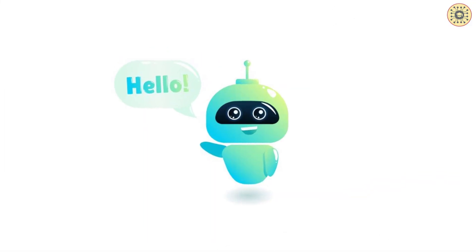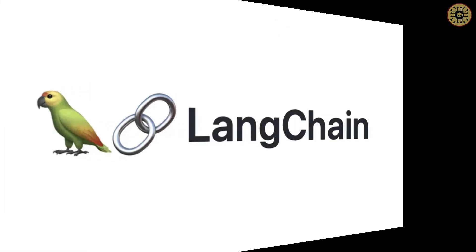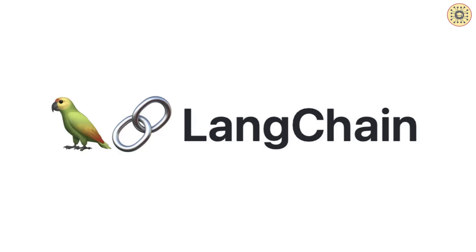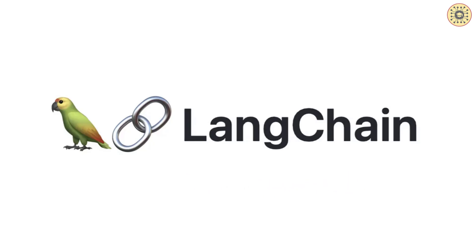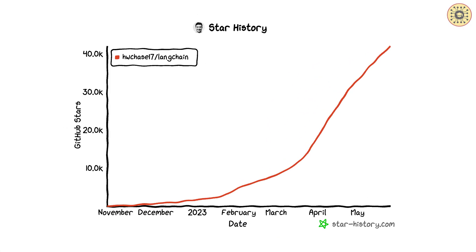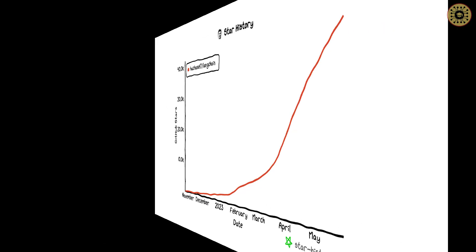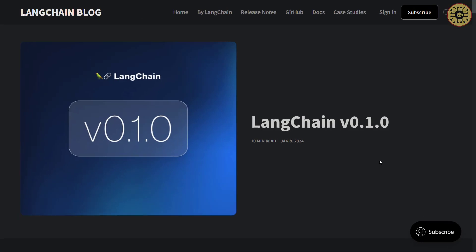Recently, it has become very popular to develop applications such as ChatBots using LLMs. This is where LangChain comes into play. In short, LangChain is a framework for developing applications using LLMs. This framework was released last year but it quickly became very popular. A new stable version, LangChain version 0.1, was recently released.